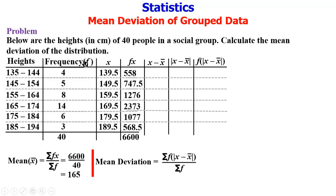At this column this is our x and this is our x̄. So 139.5 minus 165 gives minus 25.5. 149.5 minus 165 gives minus 15.5.